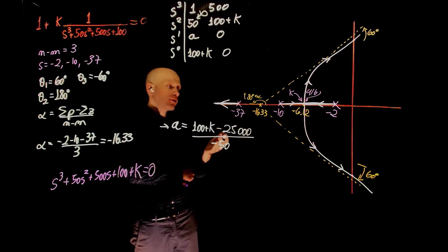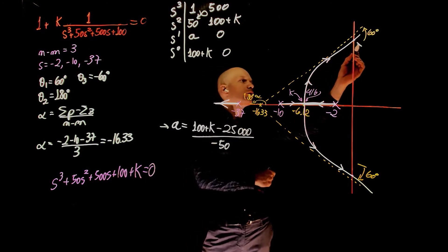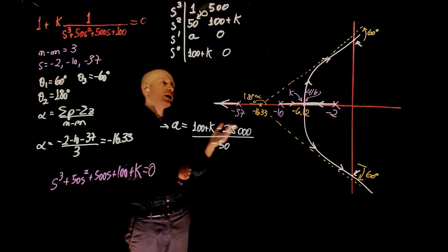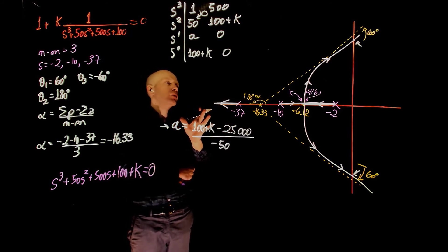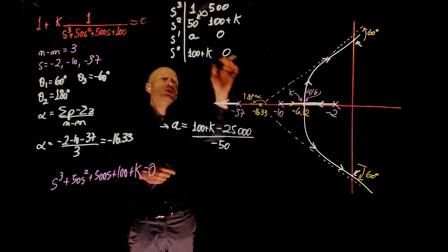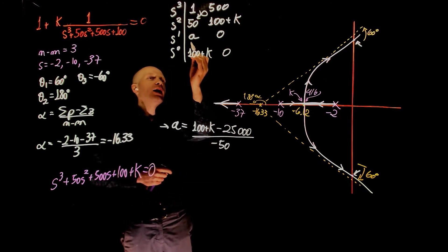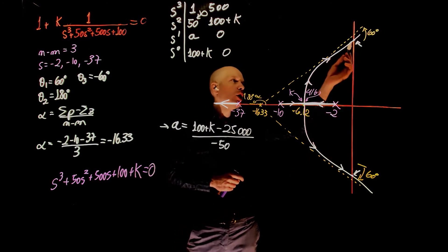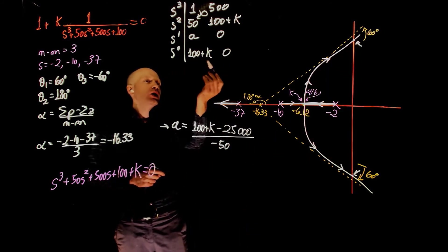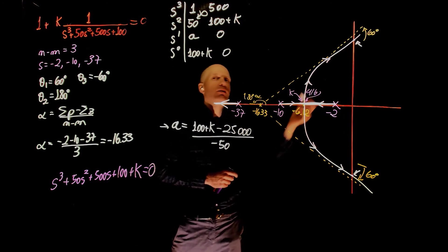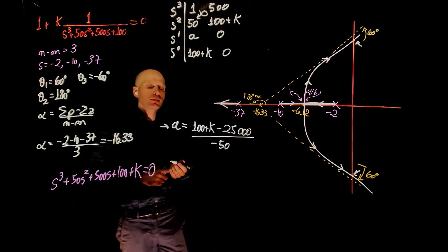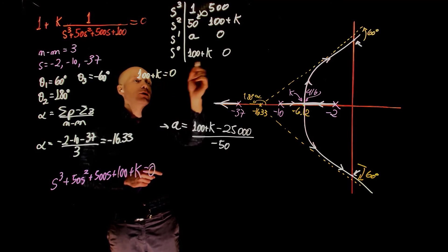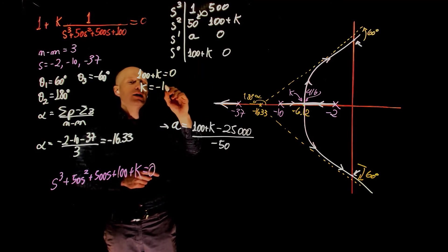Now if you are looking for values of k that will bring the root locus to these two points, when you lie on the imaginary axis, we know that there in the Routh-Hurwitz array is characterized by a row that has only zeros in it. So if a is 0, then we are located on the imaginary axis. If 100 plus k is 0, then you are also on the imaginary axis. If you solve for 100 plus k equals to 0, the value of k to satisfy that is negative 100.